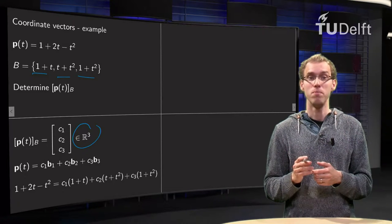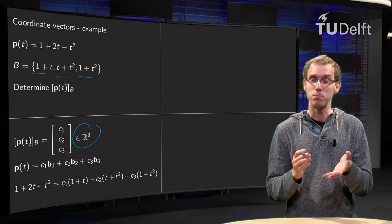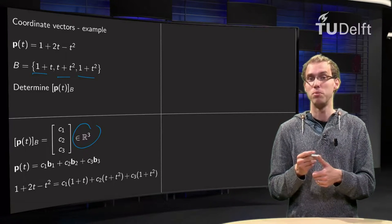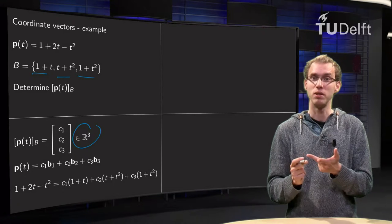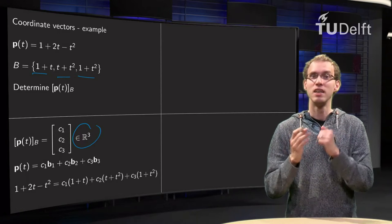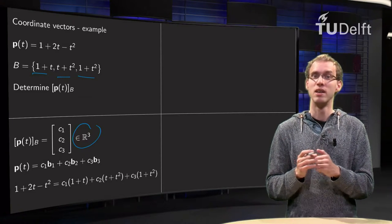Furthermore, we know that our vector p will be c1 times b1 plus c2 times b2 plus c3 times b3. That is the definition of a coordinate vector.